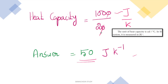So 1000 divided by 20: the zeros cancel, giving 100 divided by 2, which equals 50 joules per Kelvin, that is 50 J K⁻¹. This is the heat capacity of the iron ball.